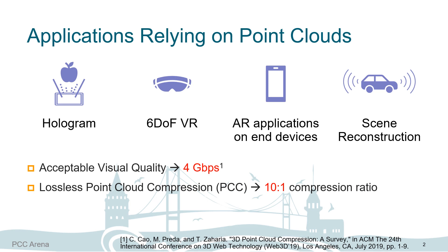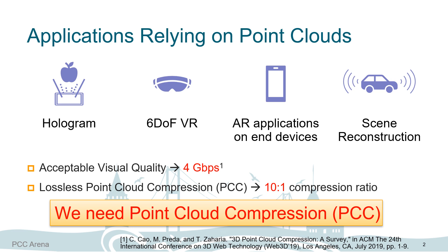What can point clouds do? Here are some applications relying on point clouds: hologram, 6 degrees of freedom VR, AR applications on end devices, and scene reconstruction in autonomous cars. Point clouds have better potential and performance than meshes on these applications. A point cloud stream with acceptable visual quality requires about 4 gigabits per second. With point cloud compression, we can compress it with a 10-to-1 ratio or more. Therefore, we need point cloud compression.